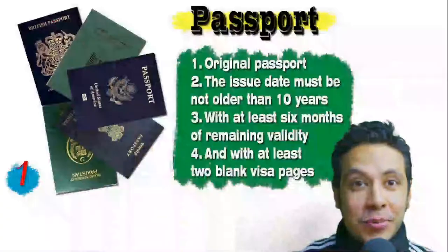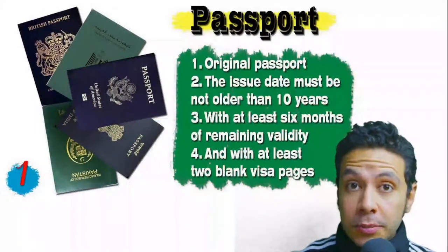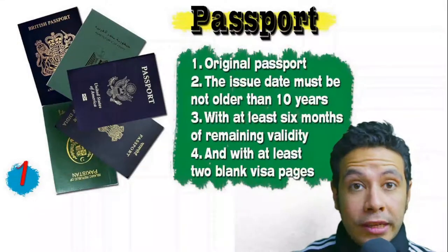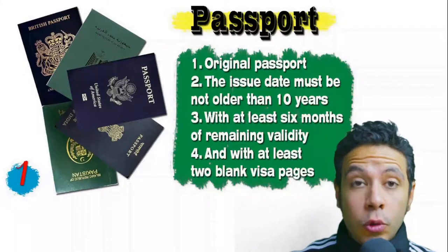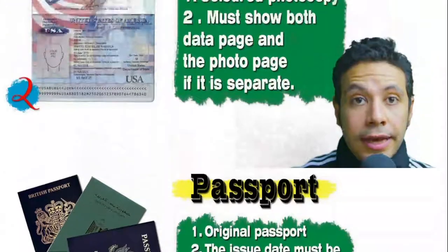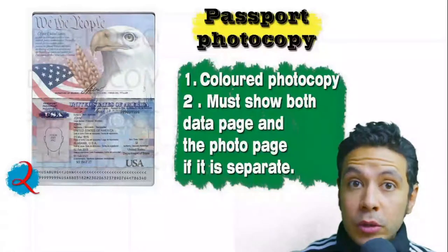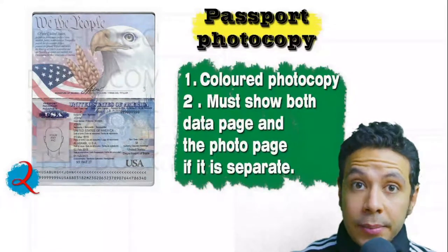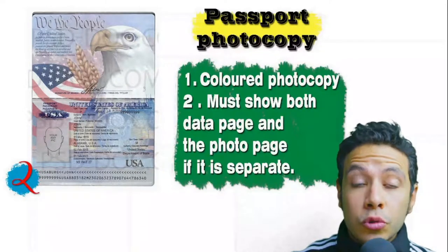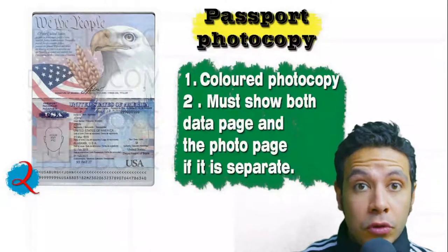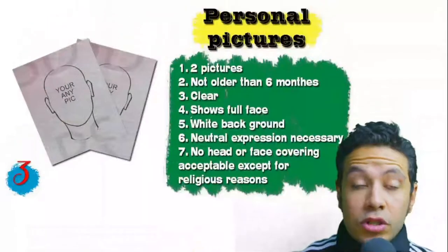Speaking about required documents: your passport must be original, not older than 10 years, with at least six months of remaining validity and at least two blank visa pages for stamps. In many cases you will also need a passport photocopy — it might be one copy or more, preferred to be colored with both the data page and photo page showing. In some cases you might be required to photocopy every single page, but generally only the data page and photo page are needed.